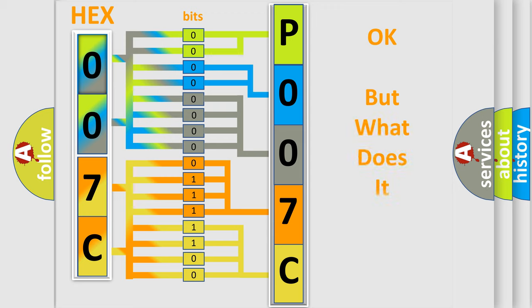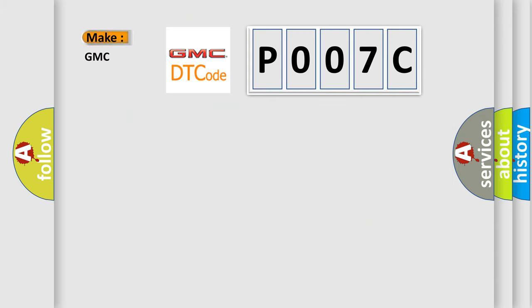The number itself does not make sense to us if we cannot assign information about what it actually expresses. So, what does the Diagnostic Trouble Code P007C interpret specifically for GMC car manufacturers? The basic definition is: lost communication with ECM or PCM.